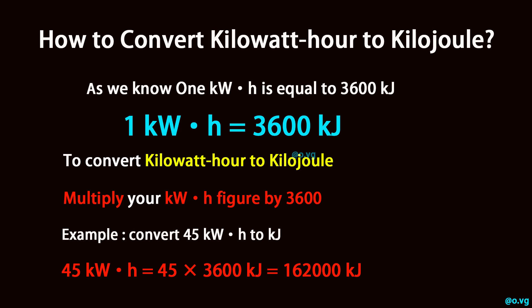To convert kilowatt-hour to kilojoule, multiply your kilowatt-hour figure by 3600.